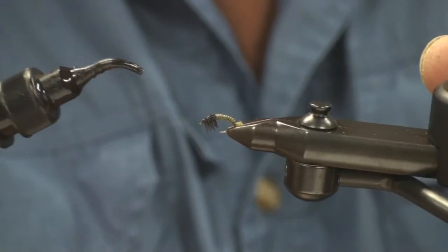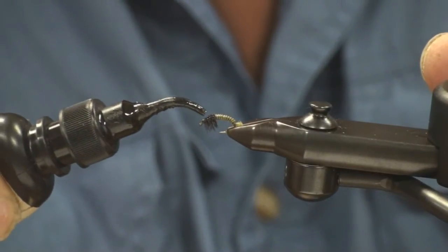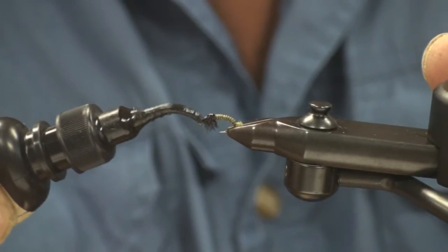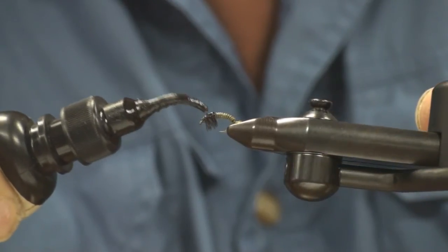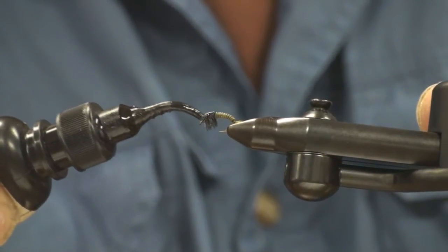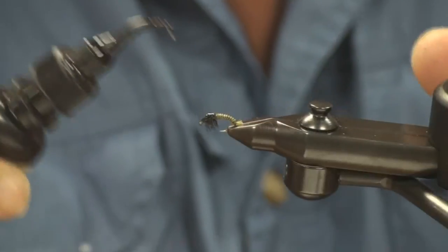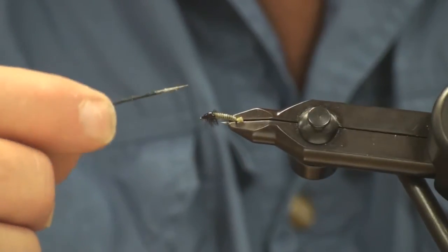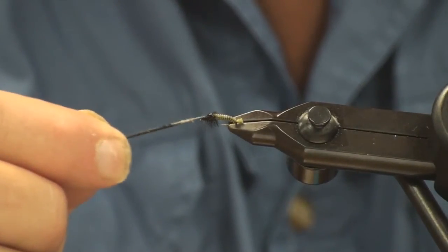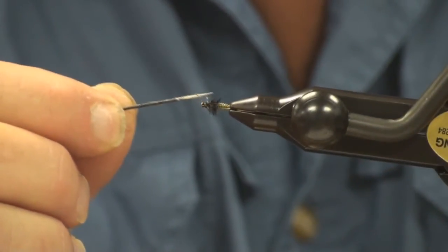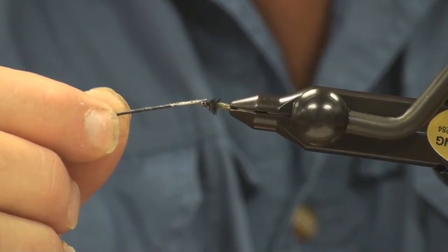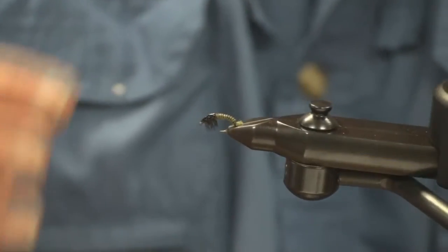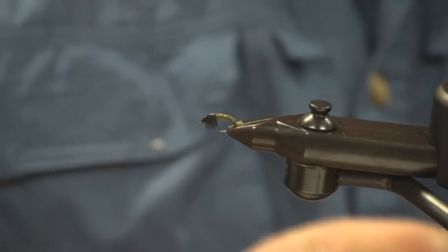I'm using the clear cure goo here to do the shell back. With the marker being wet, it will soak up some of the black ink. Take my bodkin and just, this is your head cement too. Make sure you get a little bit down into the legs. This stuff's good because gravity will take care of itself. It will round off very nicely.